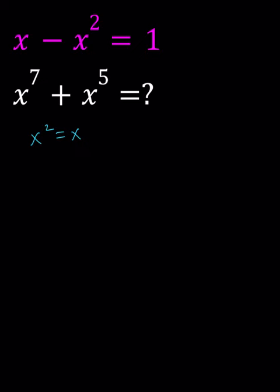We can write x squared equals x minus 1, and then multiply both sides by x.